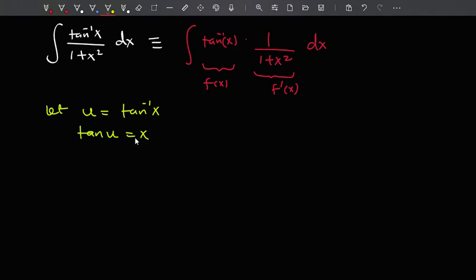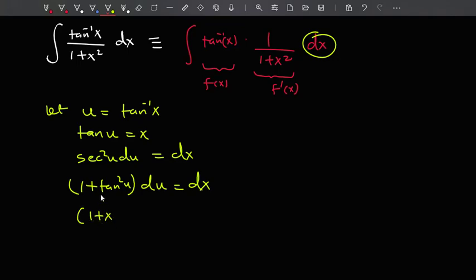So if I take derivatives on both sides, I'll have sec squared u, du equals dx. Of course, we want to substitute for dx, so we'll use this right here. But of course, this is the same as 1 plus tan squared u, du equals dx. And we know what tan squared u is, that's actually x squared, so 1 plus x squared. So this is 1 plus x squared du equals dx. So that's what we are going to substitute right here. And I think we should do that now.